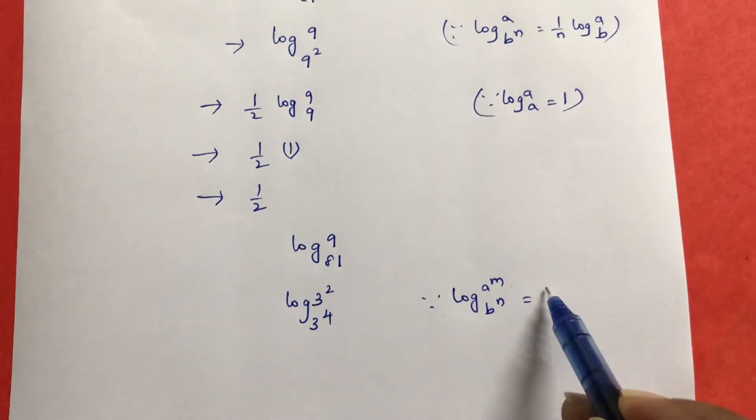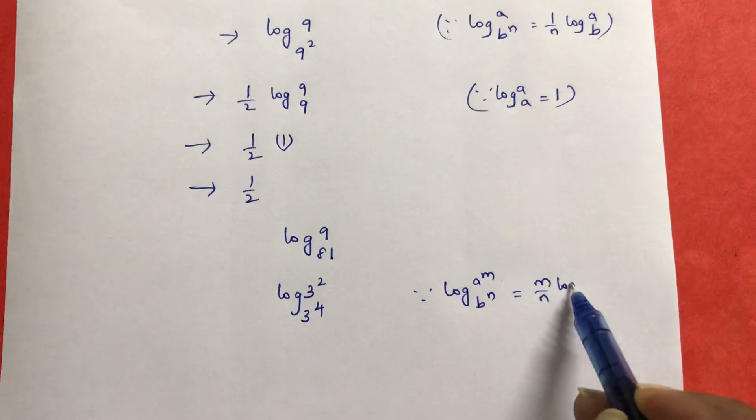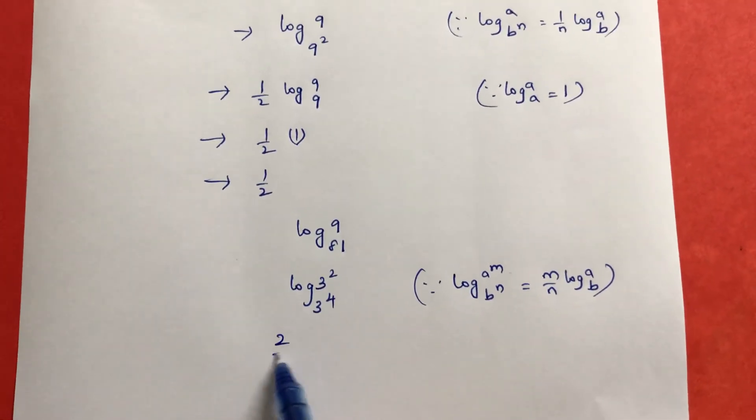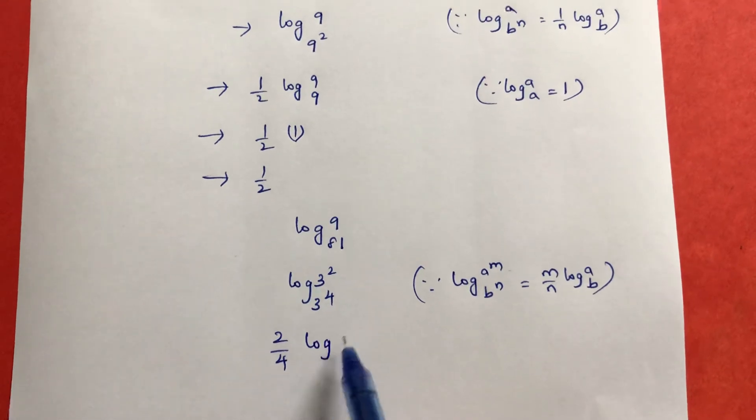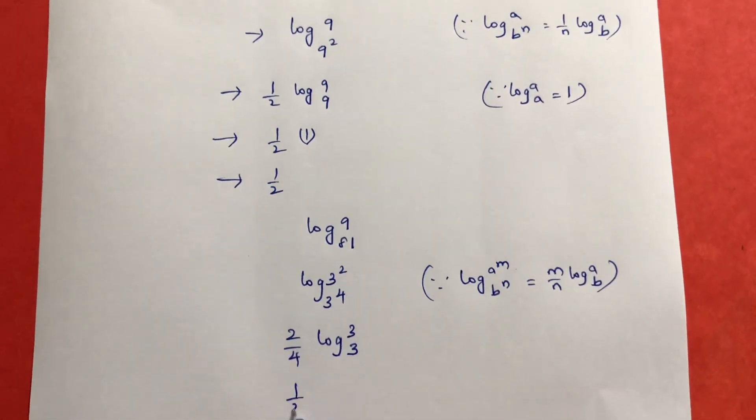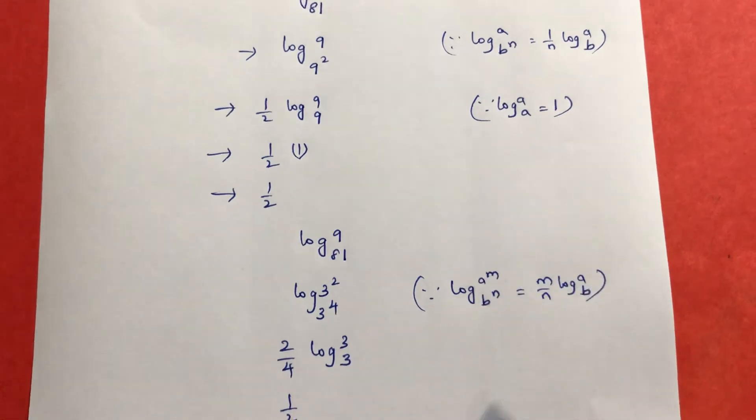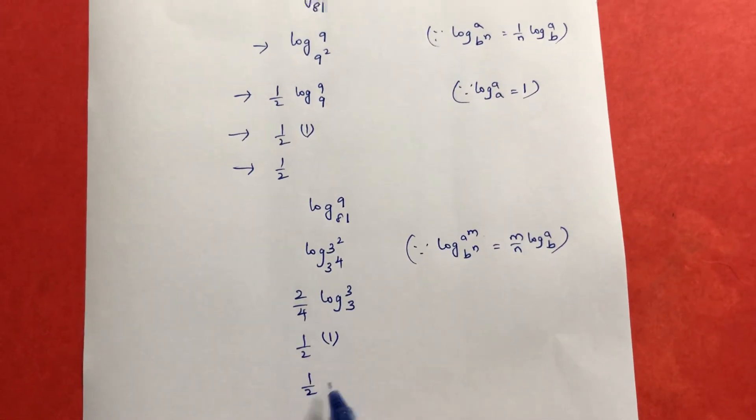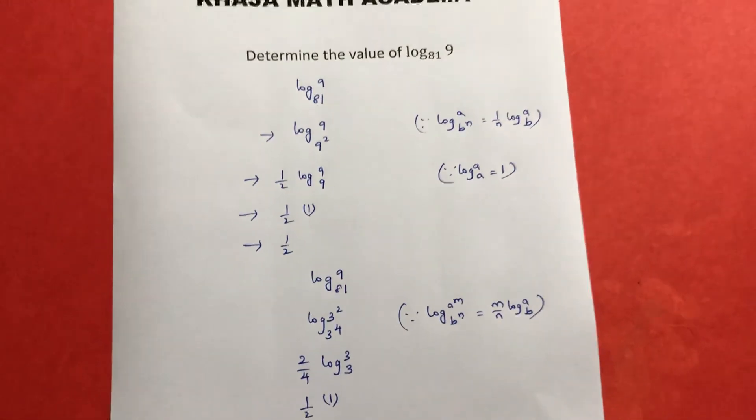Is m by n log a to the base b. So here it is 2 by 4 log 3 to the base 3, which is 1 by 2. Log a to the base a value is 1, so log 3 to the base 3 is 1. Either of the way you can solve this problem.